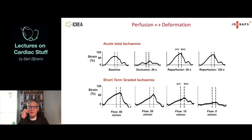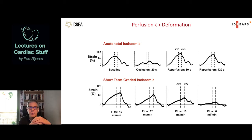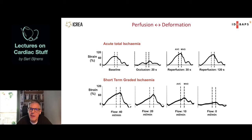Just to repeat from last time: what is important when you look at coronary artery disease is your territory at risk, which is normally perfused by the coronary artery that is being occluded or partially occluded. With acute occlusion, because there's no oxygen locally, you get a decrease in systolic deformation, and later when pressure drops you get passive elastic interaction between segments, producing post-systolic deformation.